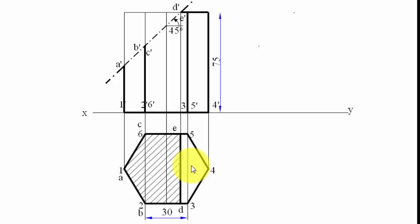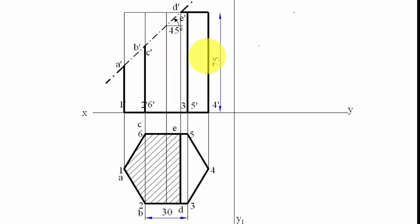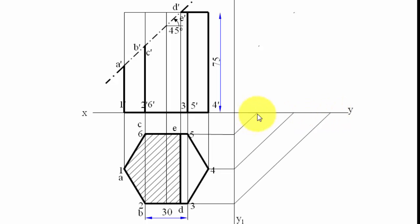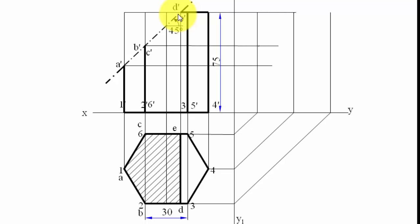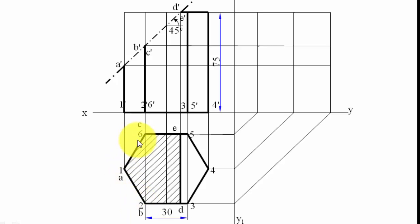For the sectional left hand side view, we draw a construction line X1Y1 representing the profile plane. We extend lines from all points to the right until they meet this vertical line, then rotate them 45 degrees to the horizontal line, and again project them vertically. Lines from the front view are also extended. In the side view, extreme left gives point six, center gives one, and extreme right gives two.